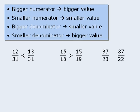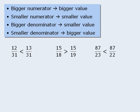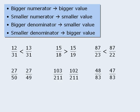Finally, in this example, the fraction on the right has the smaller denominator, so it must have the greater value. Here are three more to practice with — let's see if you get the following results.